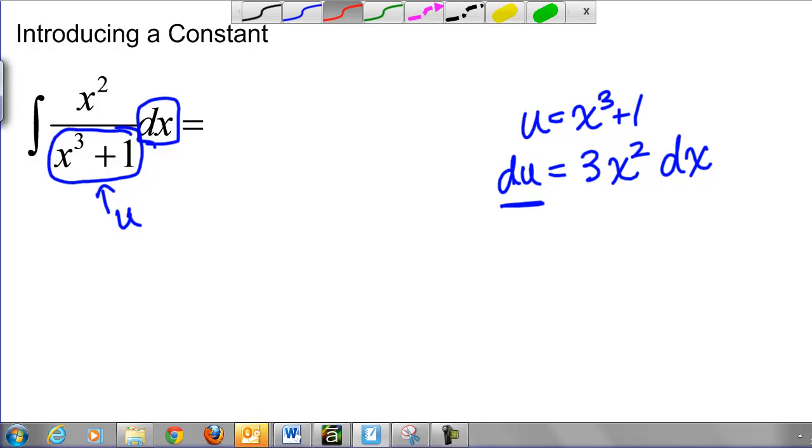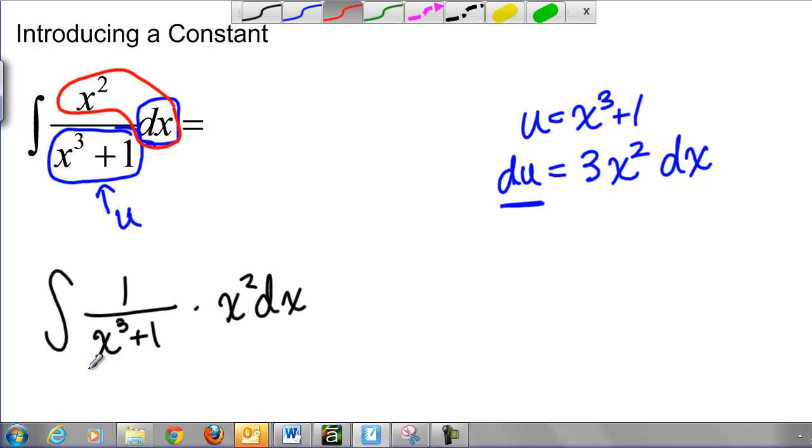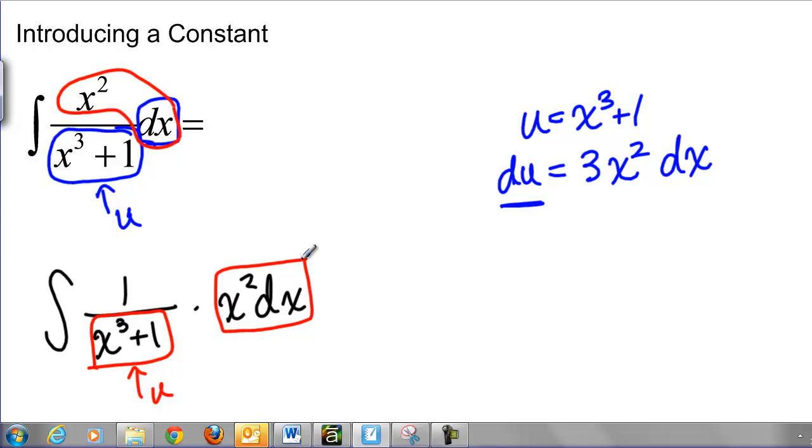Let's see if it matches up perfectly. What I have left over here is an X squared times DX. Maybe if this is hard for you to see, maybe we should rewrite this problem. This is the integral of 1 over X cubed plus 1 times X squared DX. I have 1 over U essentially times X squared DX. Over here I have an X squared DX as well, but I have a 3, an extra 3.